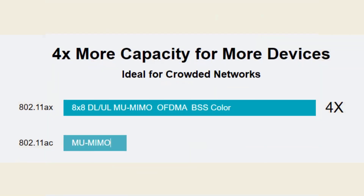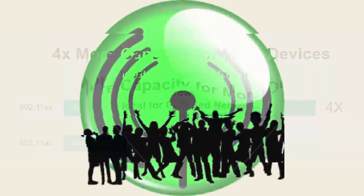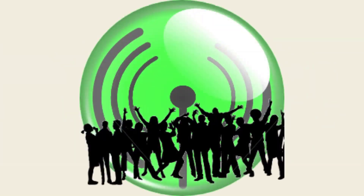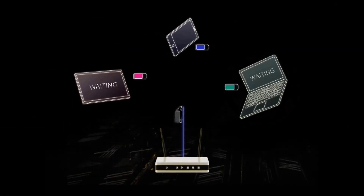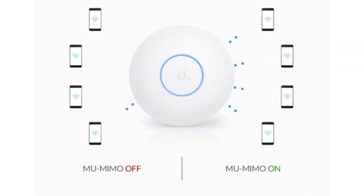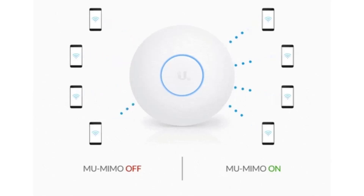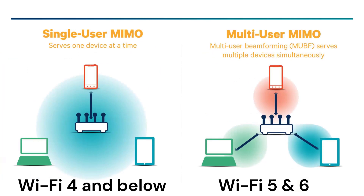Secondly, Wi-Fi 6 offers 4 times more capacity for more devices, which makes it ideal for crowded networks because it can handle more devices flawlessly with its 8x8 uplink/downlink. Both Wi-Fi 6 and Wi-Fi 5 have multi-user, multiple input and multiple output (MU-MIMO), a wireless technology which allows a router to transmit data to multiple devices simultaneously.